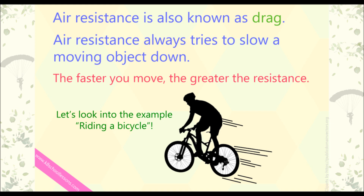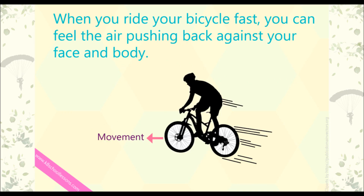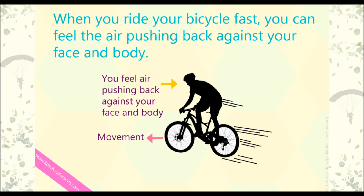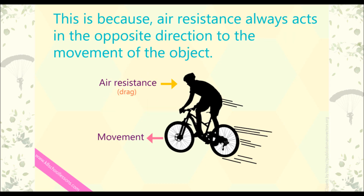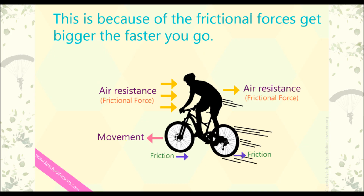Let's look into the example of riding a bicycle. When you ride a bicycle fast, you can feel the air pushing back against your face and body. This is because air resistance always acts in the opposite direction to the movement of the object. The faster the bike moves, the bigger the air resistance becomes, because the frictional forces get bigger the faster you go.